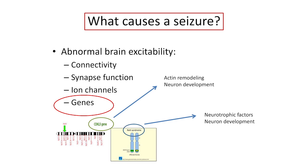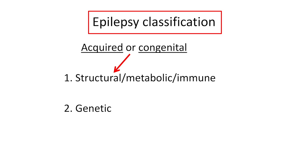We've talked about epilepsy — its definition, seizure classification, and why a seizure occurs. Now, how do we classify epilepsy? Epilepsy can be acquired — it can occur if someone gets a head injury — or it can be congenital. Of those you may be born with, there are structural, metabolic, autoimmune, or genetic possibilities. For Rett syndrome and CDKL5, we're dealing mainly with the genetic.